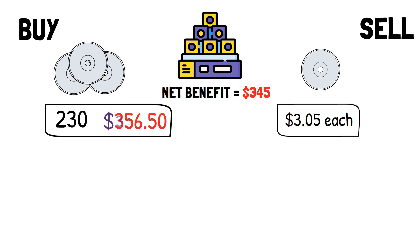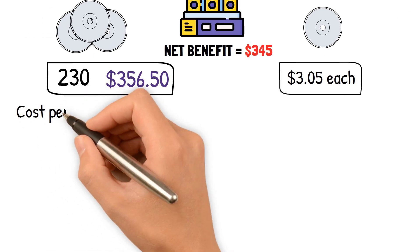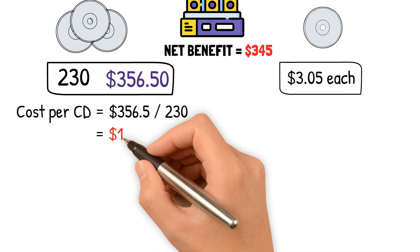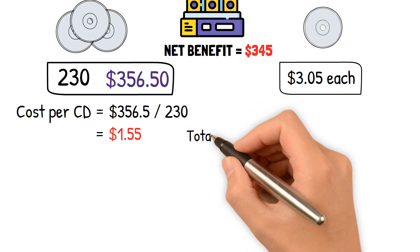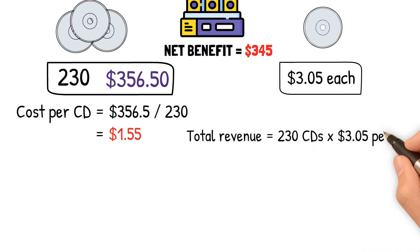The cost of purchasing the CDs is given as $356.50 for 230 CDs, which works out to $356.50 divided by 230 equals $1.55 per CD. The revenue from selling each CD is expected to be $3.05, so the total revenue from selling all 230 CDs is 230 times $3.05 per CD, which equals $701.50 total.